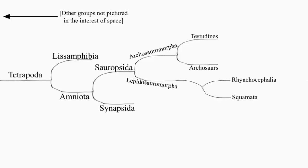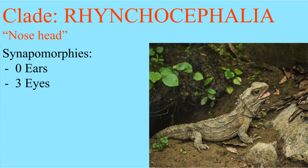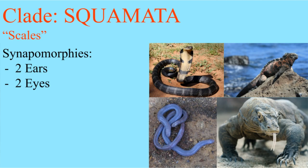The lepidosaurs divide into the nose heads and the scalies. The tuataras have three eyes but no ears, and the lizards and snakes are normal.